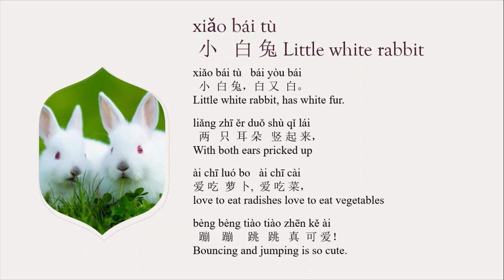两只耳朵竖起来。两 is the number two. As we know, when we have a measure word behind 二, it regularly becomes 两. Behind 两 is the measure word — 只 is the measure word for animals. 耳朵 means ear, and 竖起来 means putting up.